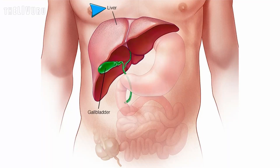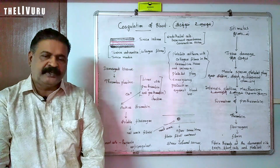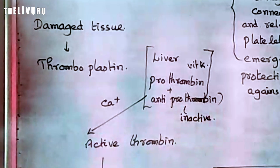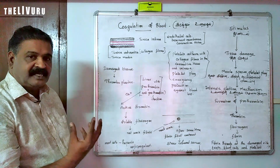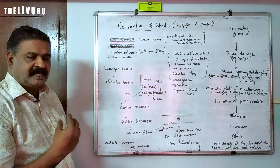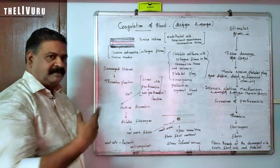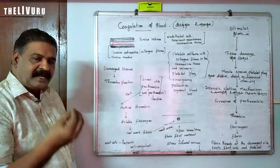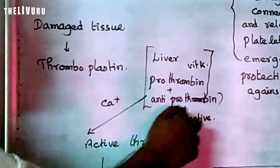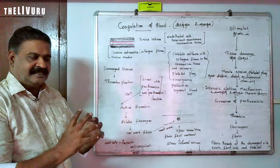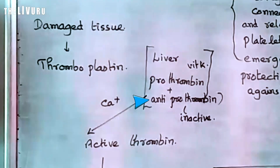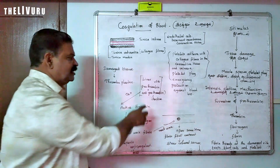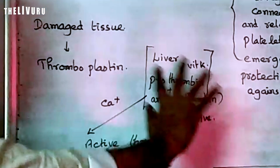The liver produces a protein called prothrombin, and vitamin K is required for this process. Prothrombin is in an inactive stage — it is anti-prothrombin. When activated by thromboplastin, prothrombin is converted into its active form, thrombin.